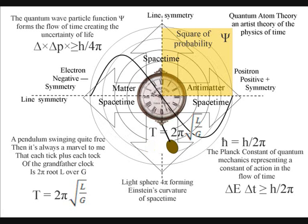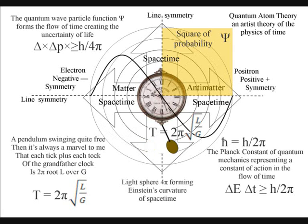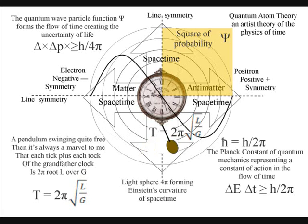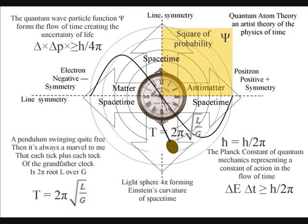In the lower right-hand corner of the diagram, we have the Planck constant, H over 2 pi, representing a constant of action in the dynamic process that forms the arrow of time. Also, we see Heisenberg's uncertainty principle reformulated with energy and time, with 2 pi representing the timeline, instead of 4 pi representing three-dimensional space.